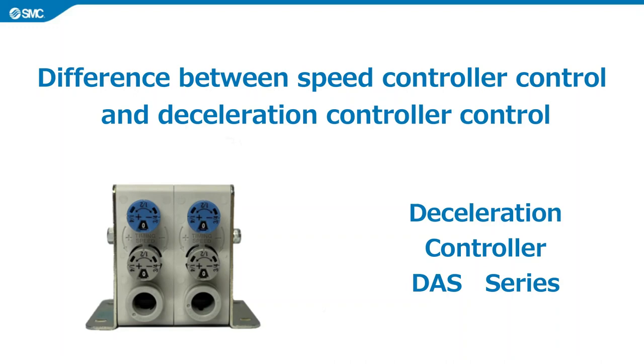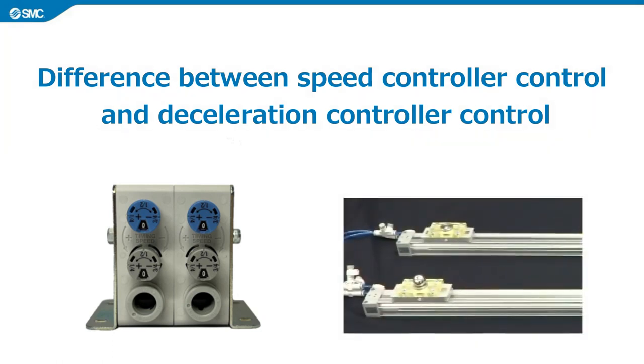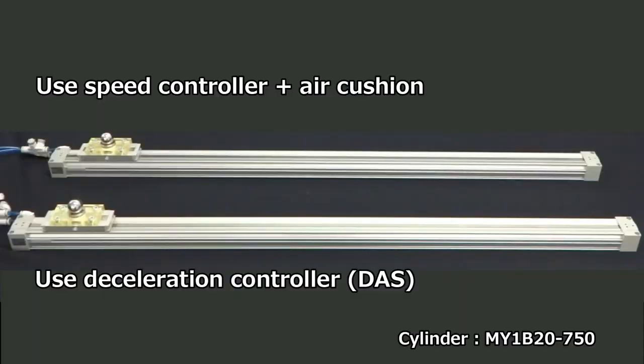We will introduce the difference in cylinder behavior using a speed controller and a deceleration controller. The above cylinder is controlled by a speed controller with an air cushion built-in, and the below one is controlled by using the deceleration controller only. Both cylinders are adjusted to actuate at the same timing.